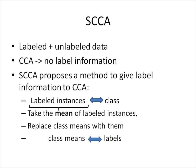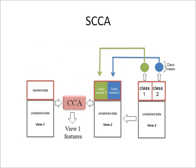If we have both labeled and unlabeled data as two or more views, we can use CCA. However, CCA doesn't use the label information we have at hand. CCA proposes a method to give label information to CCA. Since we already know the class information of the labeled instances, for each class we take the mean of labeled instances and obtain a class mean. Then we replace all labeled instances with their corresponding class mean. Thus, all instances belonging to the same class are represented with the same values. We gave the class means as labels to CCA. The following figure might help you to visualize.